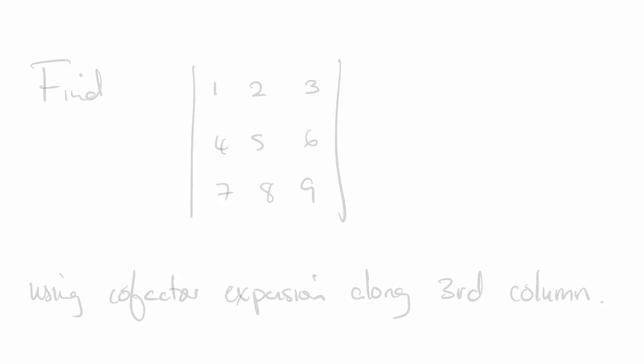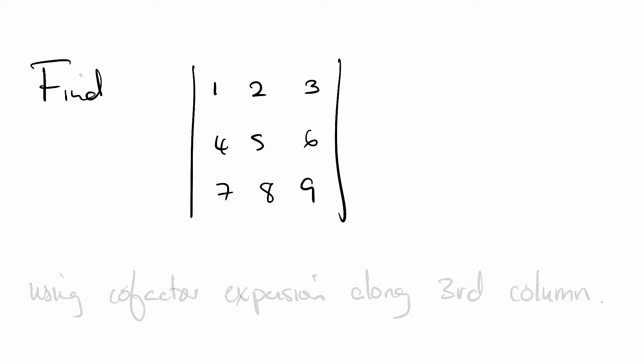Today we're going to find the determinant of the matrix [1, 2, 3, 4, 5, 6, 7, 8, 9]. When we find the determinant of matrices like this, we can do a cofactor expansion along the first, second, or third row, or any column. Today we're going to use the cofactor expansion along the third column.